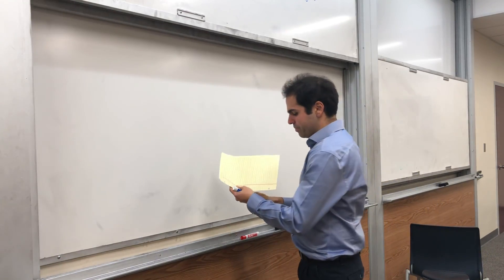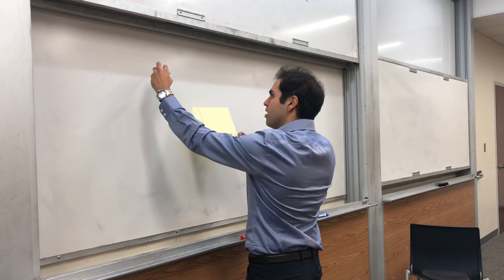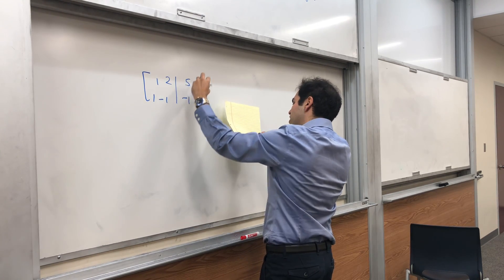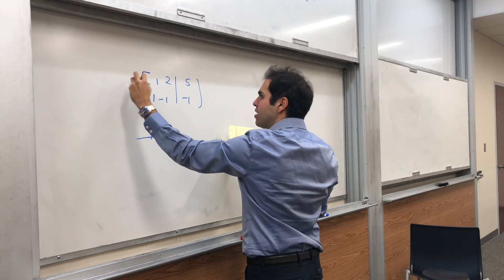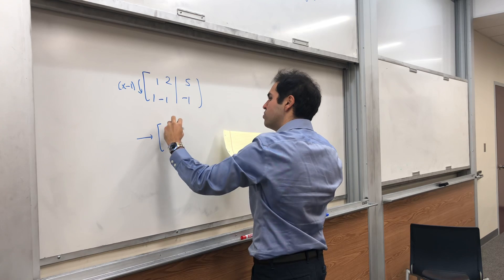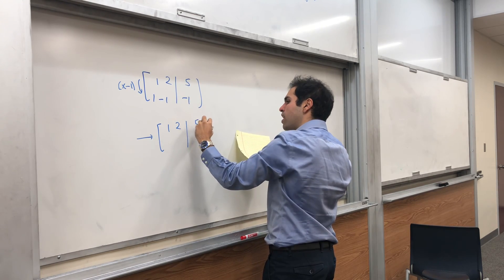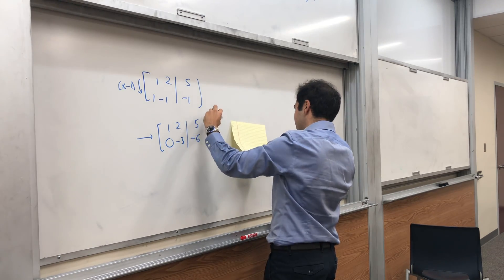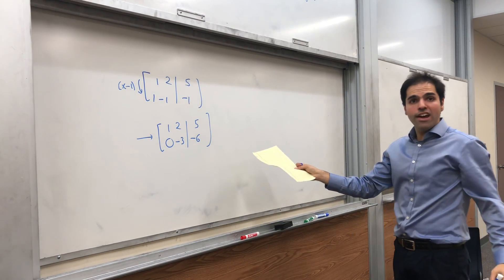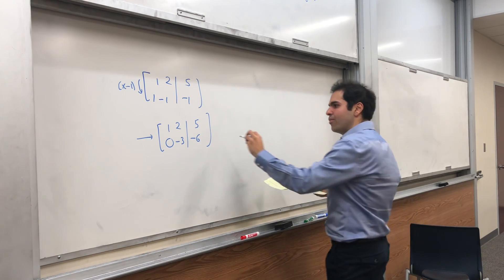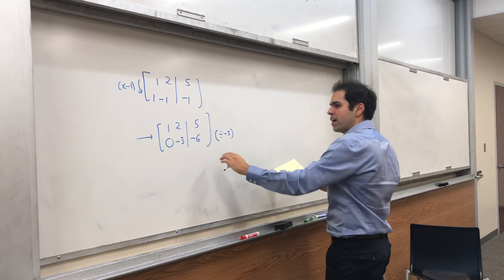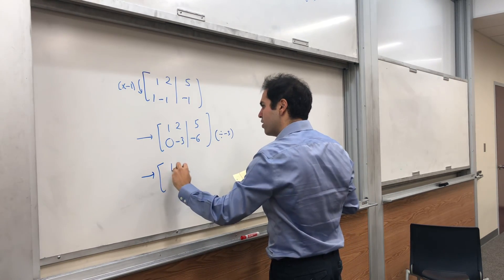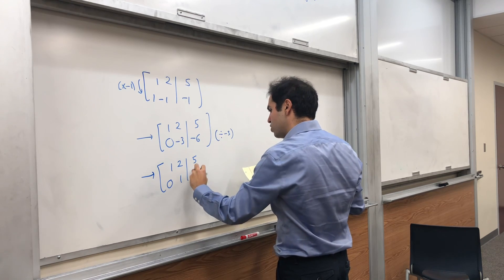So let's just row reduce. [1,2,5; 1,-1,-1]. Okay, you row reduce. So let's subtract this row from this row. So [1,2,5; 0,-3,-6]. Well, yes, row echelon form. But since you actually want to solve it, you have to use the reduced row echelon form. So let's turn this pivot into 1. And then we get [1,2,5; 0,1,2].